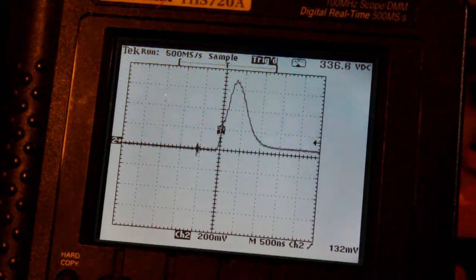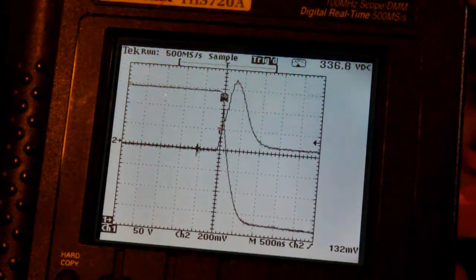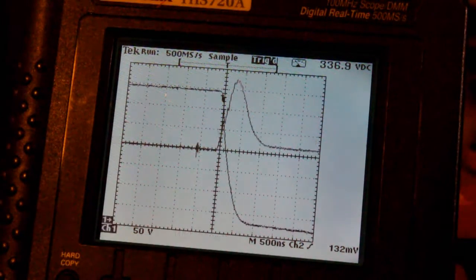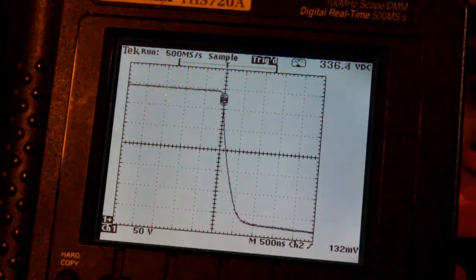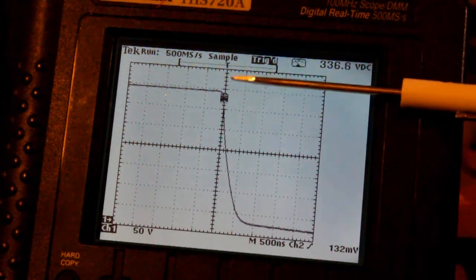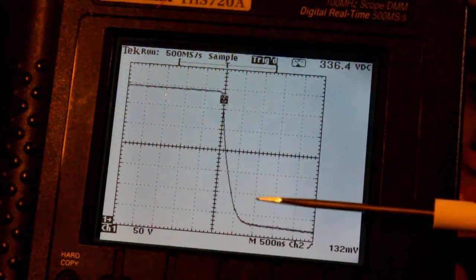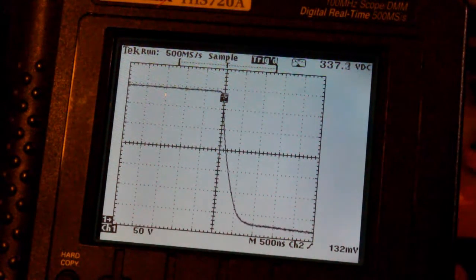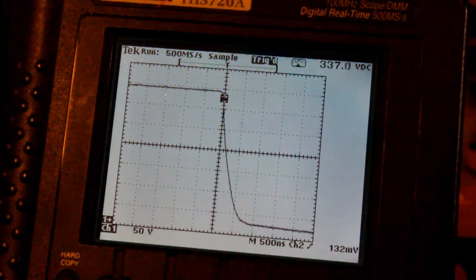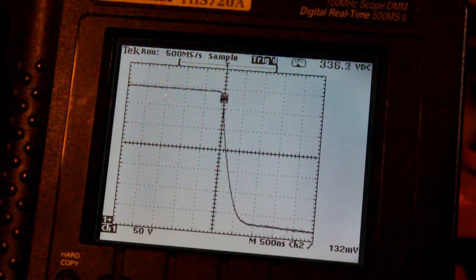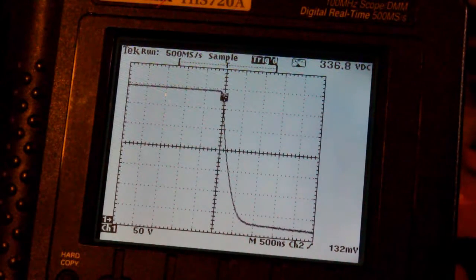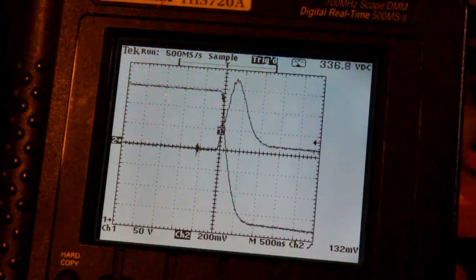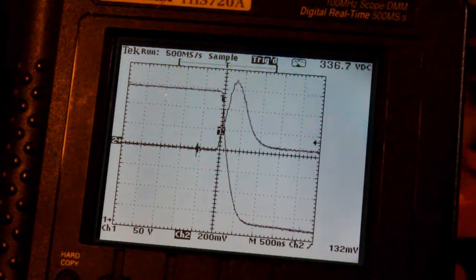Now we'll go back to channel 1 and turn channel 2 off. This is the IGBT's collector emitter voltage trace. And you can see it starts up here at the bus voltage and falls nicely all the way down to the IGBT's saturated voltage. So it doesn't really make sense that when we're driving a resistive load, turn channel 2 back on, that we'd be getting that big giant current spike.